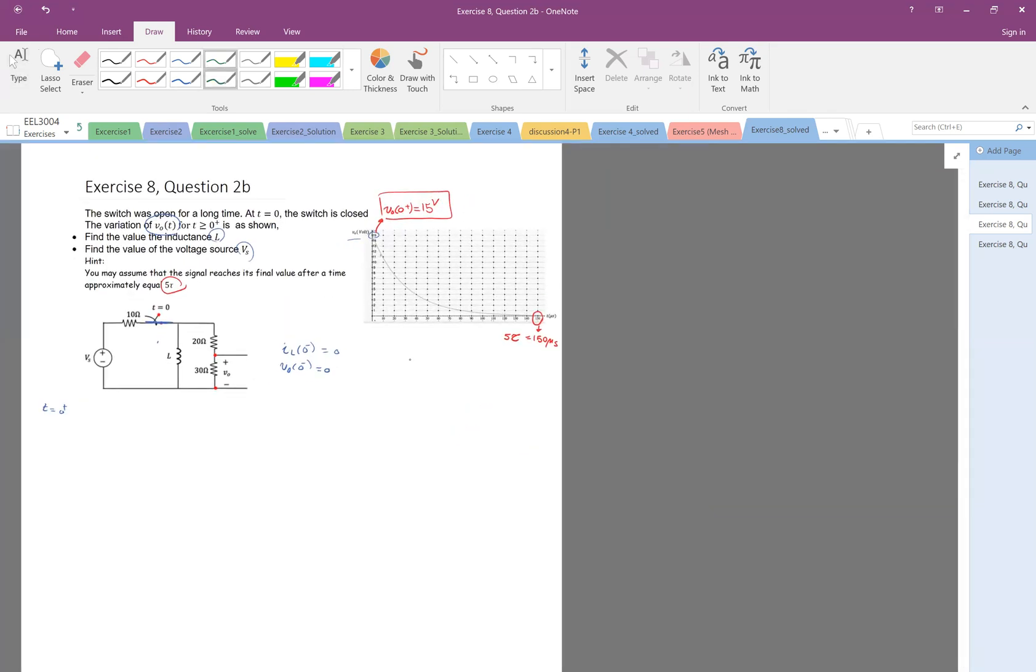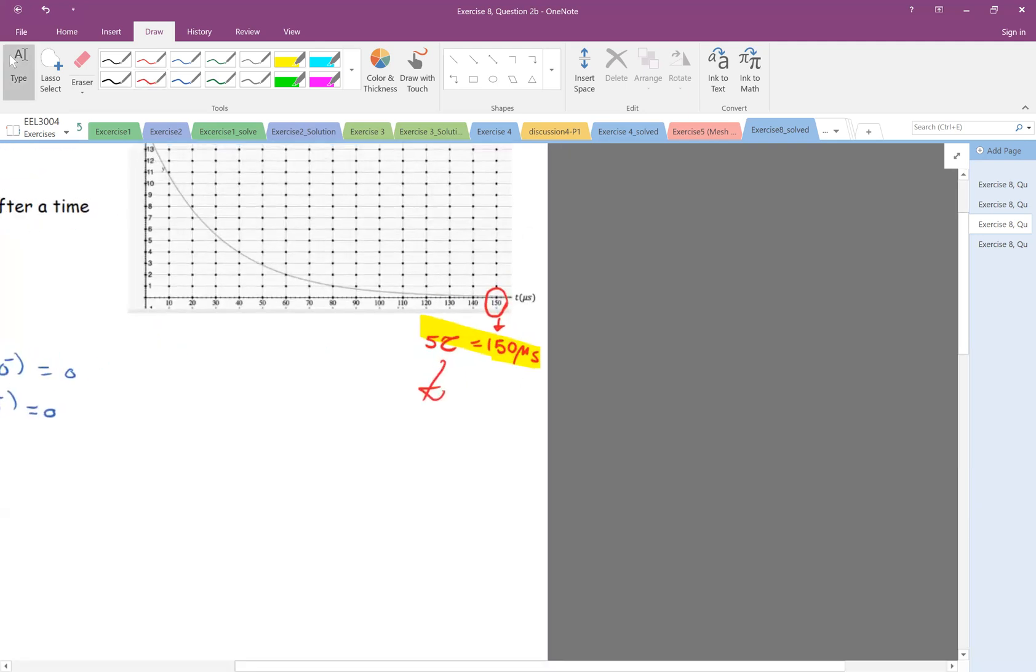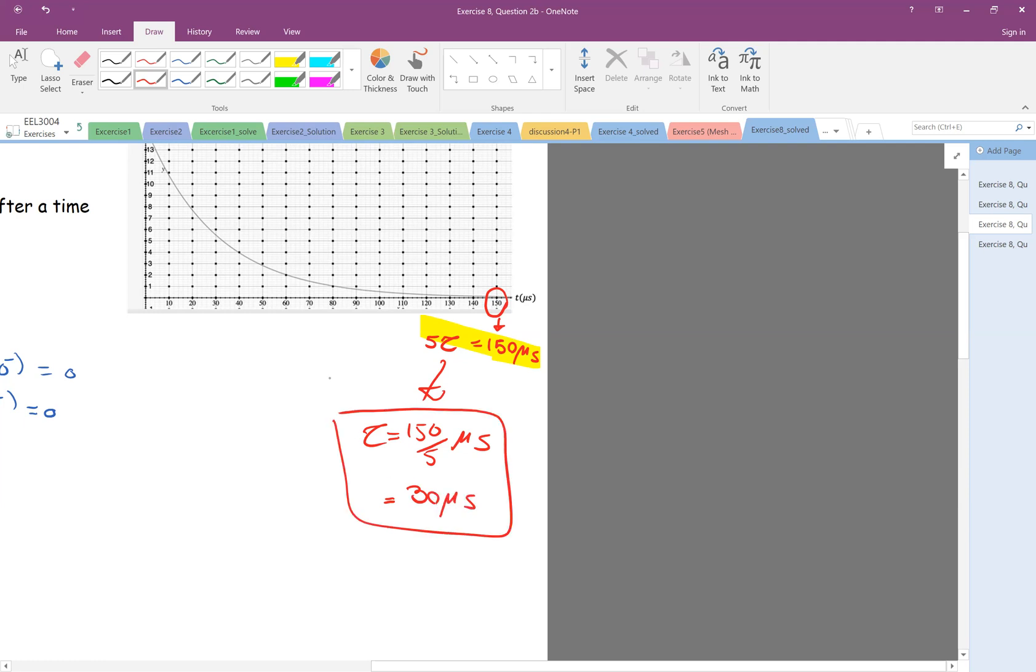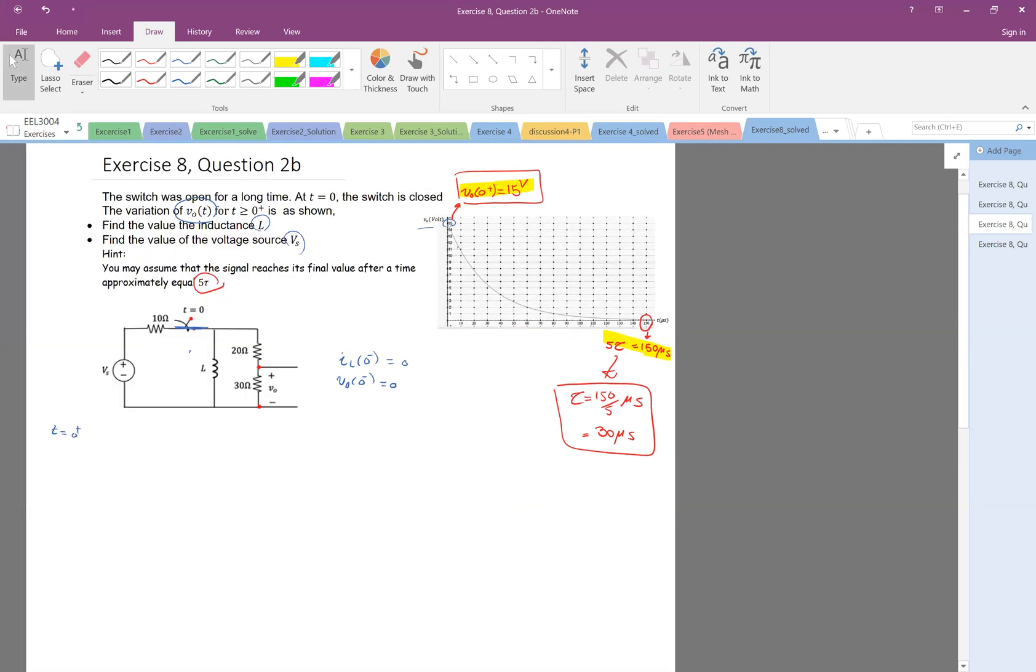So these are two information that you can extract from the graph. So from this, if five tau is 150 microseconds, then tau is 150 divided by five microseconds, which is 30 microseconds.